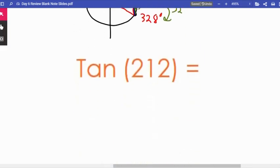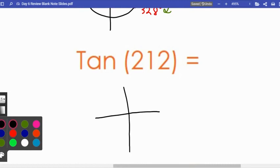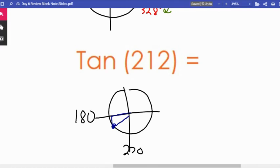Tangent of 212. I know this is 270 and this is 180. 212 is closer to 180, so my triangle is going to look something like this. Where am I? What point am I at?